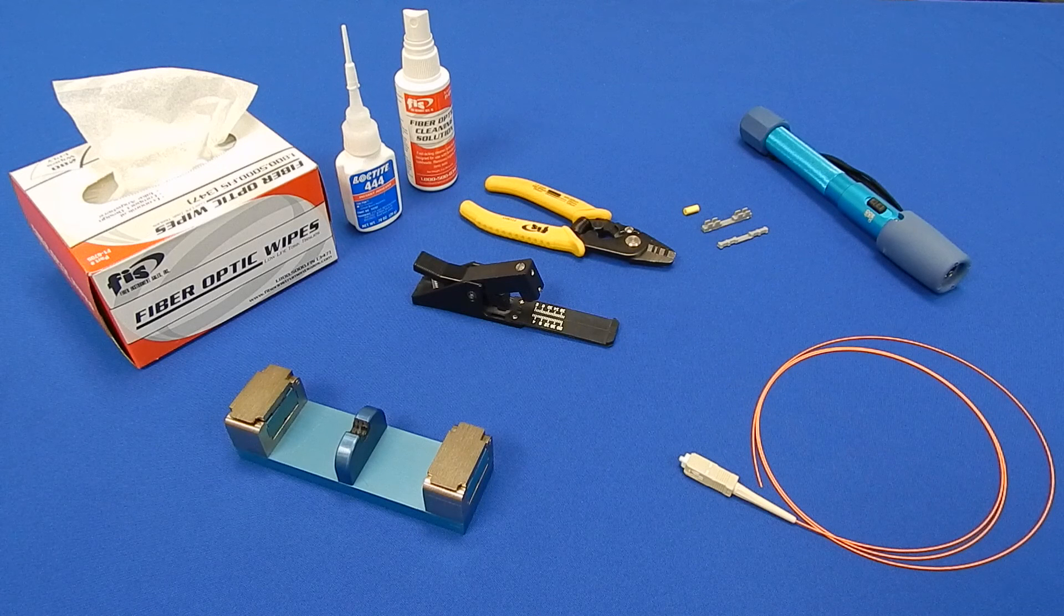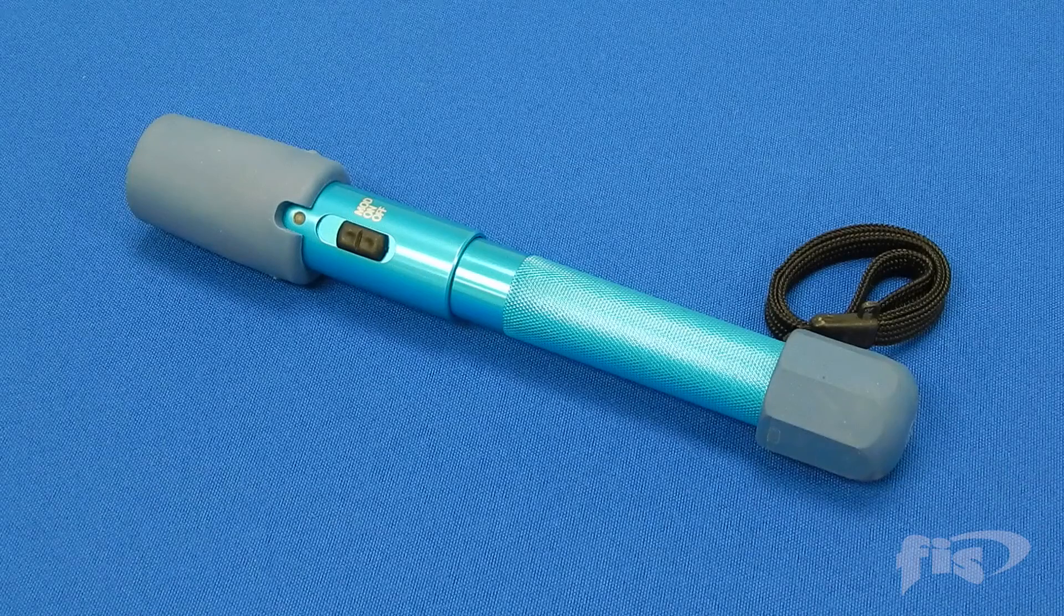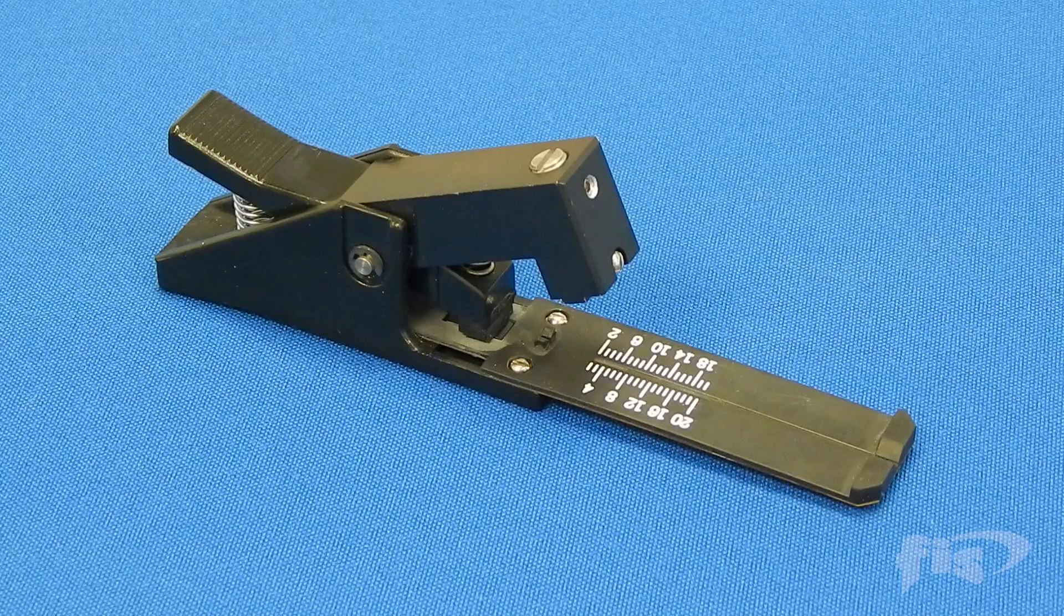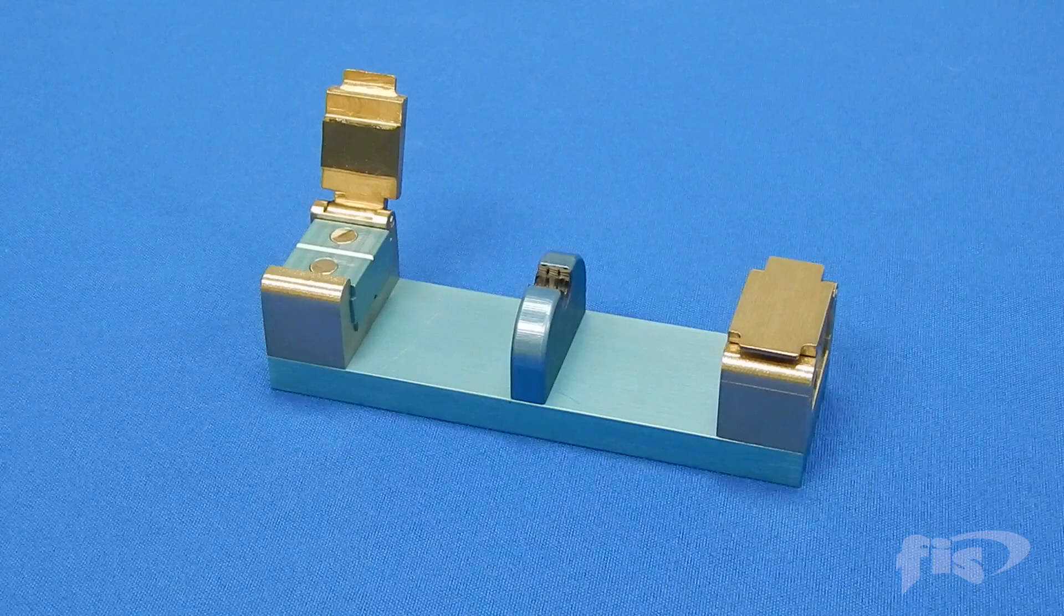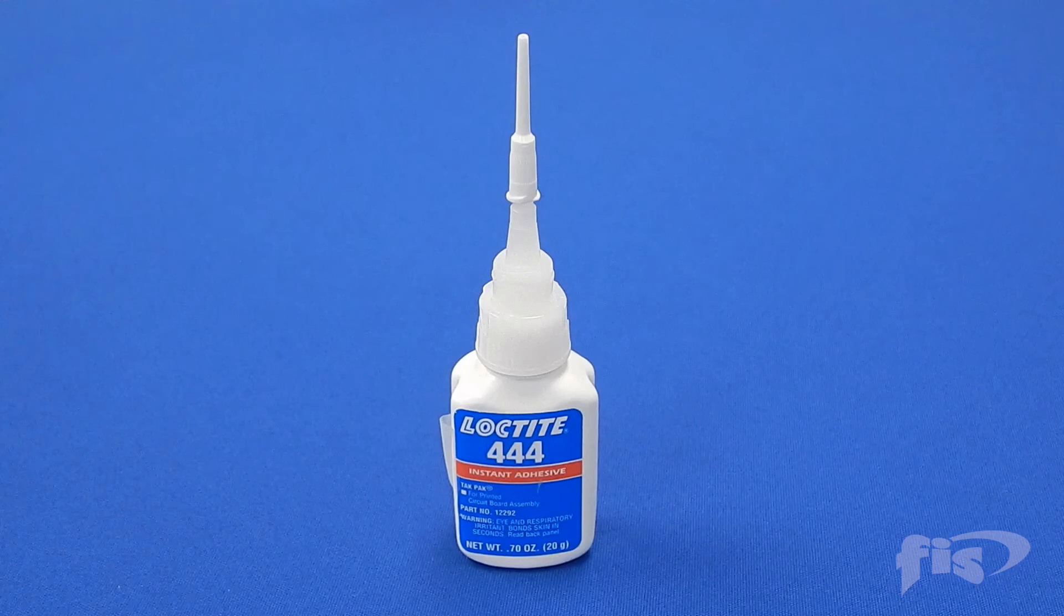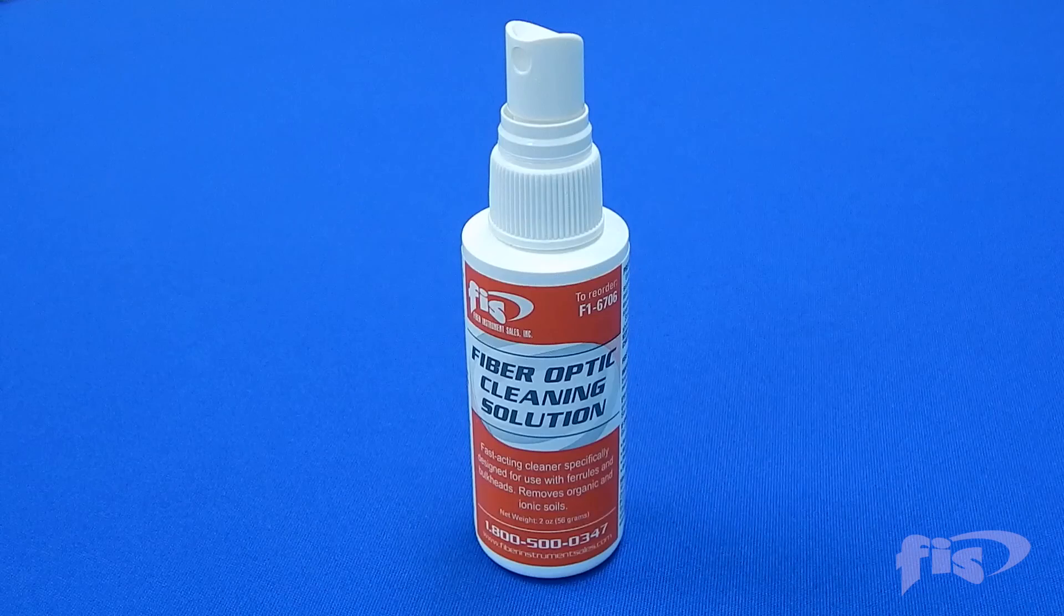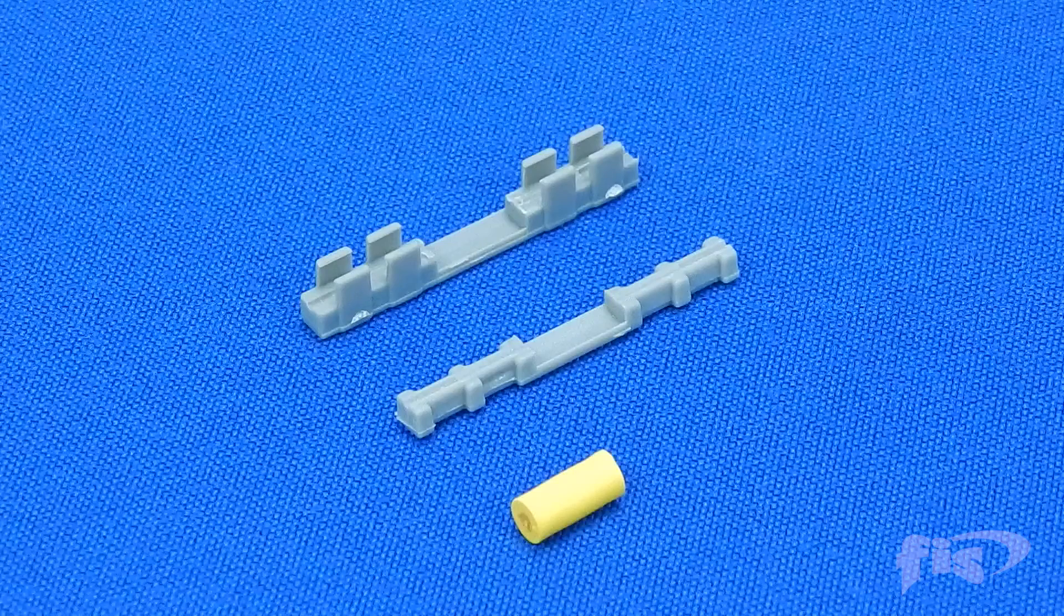Here are the items necessary for installation: Visual Fault Locator, Fiber Optic Field Cleaver, Optional Lab Splice Holder, Fiber Stripper, Quick Cure Epoxy, Cleaning Solution and Wipes, FIS Lab Splice, and Mechanical Lockjaw.